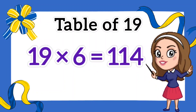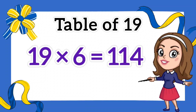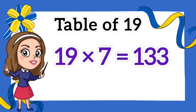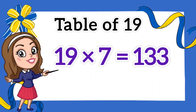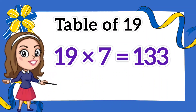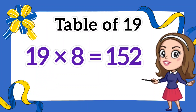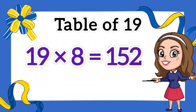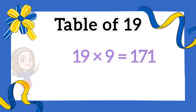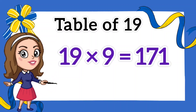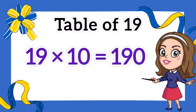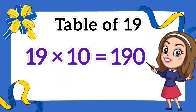Nineteen sixes are 114. Nineteen sevens are 133. Nineteen eights are 152. Nineteen nines are 171. Nineteen tens are 190.